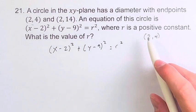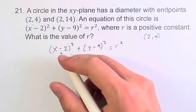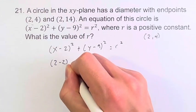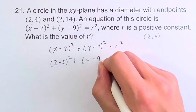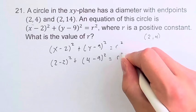So plugging in (2,4) for x, this gives us (2-2)² plus 4 for y. This gives us (4-9)². This is equal to r².